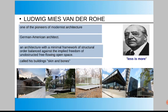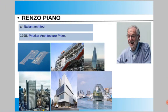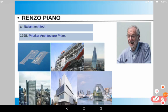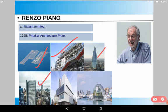Renzo Piano is an Italian architect who received the Pritzker Architecture Prize in 1998. His famous works include Kansai International Airport, the Centre Georges Pompidou in Paris, The Shard, the New York Times Building in Manhattan, the Whitney Museum of American Art in Manhattan, and the Biosphere.